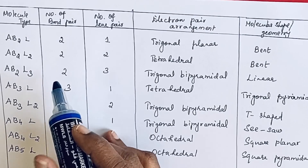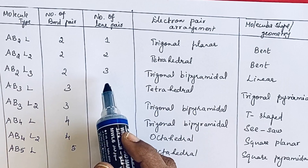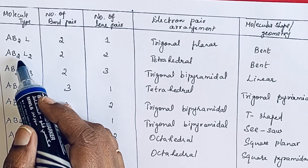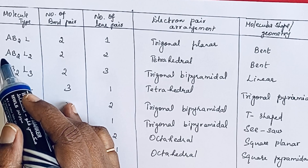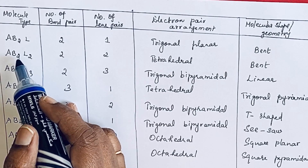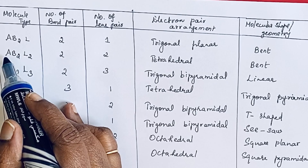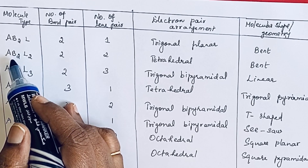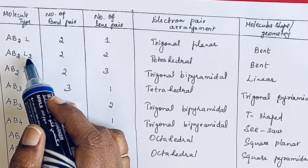Look at the table here. If bond pair is 2 and lone pair is 2, it falls under the AB₂L₂ type. Here A stands for the central atom, B stands for atoms attached to the central atom, and L stands for lone pair. We have one central atom oxygen, two hydrogen atoms (B₂), and two lone pairs, giving us AB₂L₂.